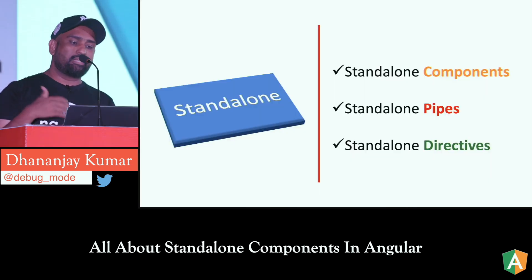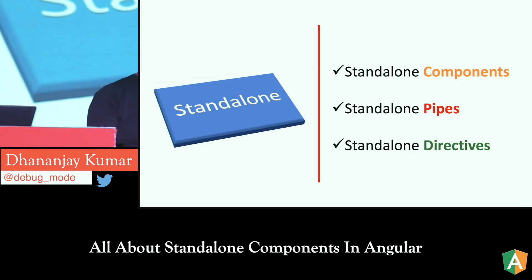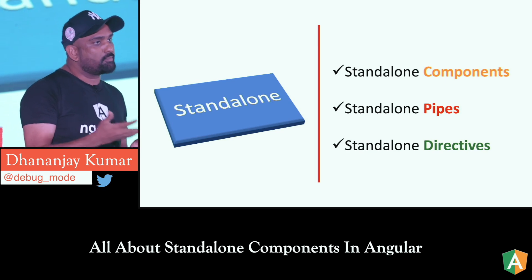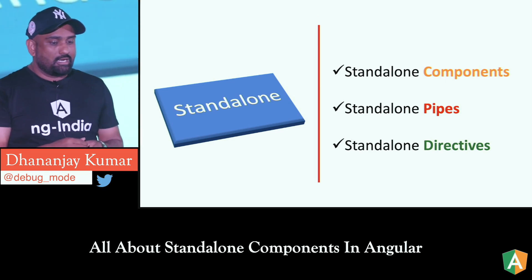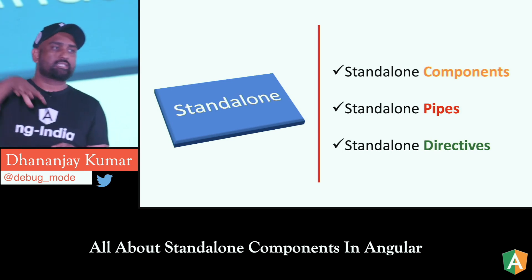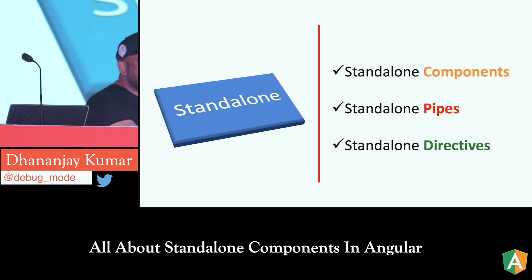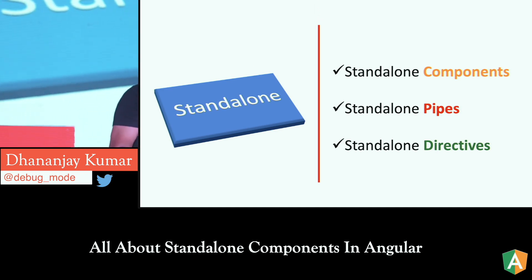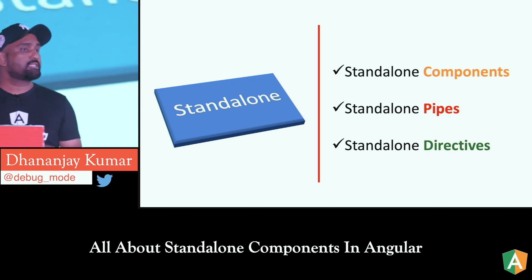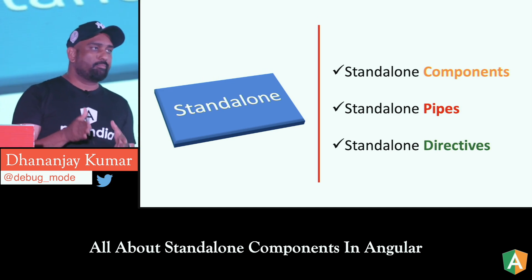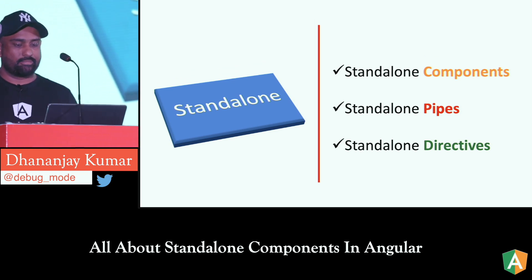When I talk to developers about standalone, they think we only have standalone components. But we also have standalone pipes and standalone directives. Directives and components are actually a type of directive — we have three types: structural directives, attribute directives, and components. So now you can create a component, a pipe, or a directive which are not part of any module, and we call them standalone components, pipes, or directives.